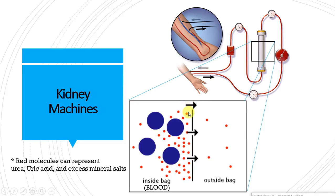So you've got, in this case, the blood on the left hand side. The blue molecules can represent the things in the blood that we want to keep in the blood. For example, red blood cells, useful proteins, all that sort of stuff.